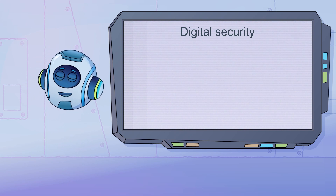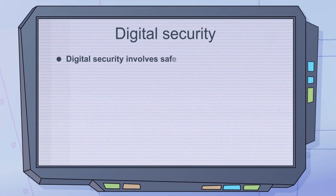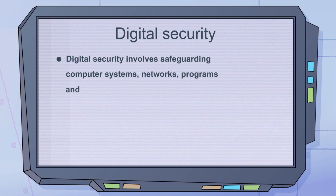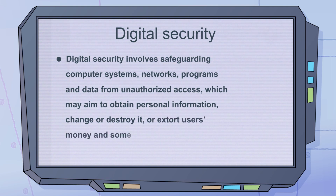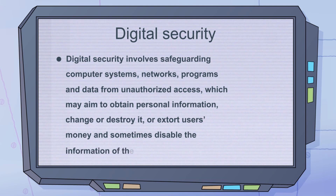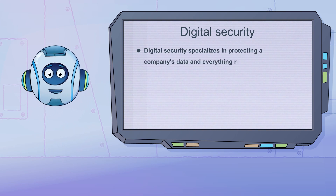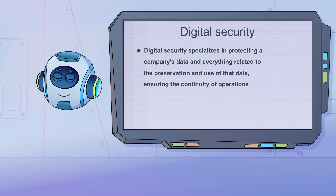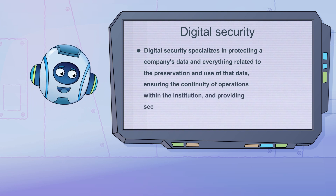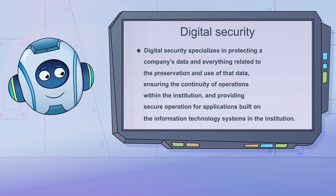Assalamualaikum warahmatullahi wabarakatuh. How are you, my friends? Today we learned that digital security involves safeguarding computer systems, networks, programs, and data from unauthorized access, which may aim to obtain personal information, change or destroy it, or extort users' money, and sometimes disable the information of the entire institution. Digital security specializes in protecting a company's data and everything related to the preservation and use of that data, ensuring the continuity of operations and providing secure operation for applications built on the information technology systems in the institution. Stay safe, until next time.